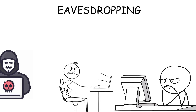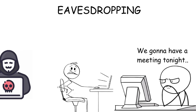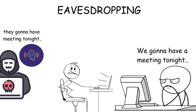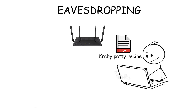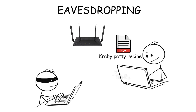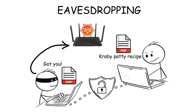Eavesdropping. Eavesdropping is when a hacker secretly listens in on a communication between two parties to steal sensitive information. For example, imagine you're at a coffee shop using free, unencrypted public Wi-Fi to send an important email to your boss. Unbeknownst to you, a hacker sitting nearby has hacked the Wi-Fi and can easily access any data being sent over the network.